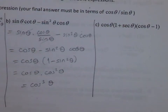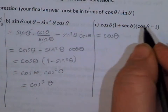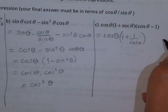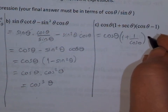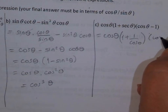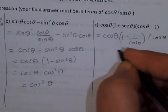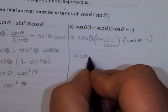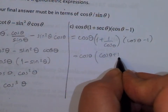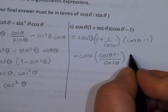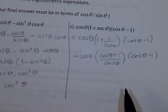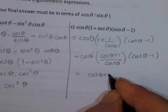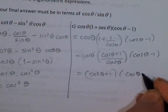Now we can replace secant by 1 over cosine theta, and keep cosine theta minus 1. Let's find a common denominator, so we get cosine theta plus 1 over cosine theta.